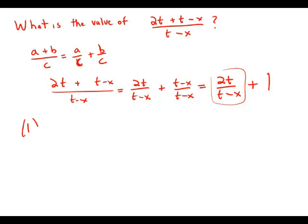So statement number 1 comes and tells us that 2t over t minus x is 3. It basically hands us an answer on a silver platter. So if this is 3, we just add 1, and the whole fraction is 4. Very easy to determine the value of the fraction. So this one is completely sufficient.